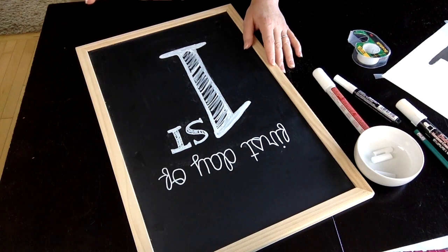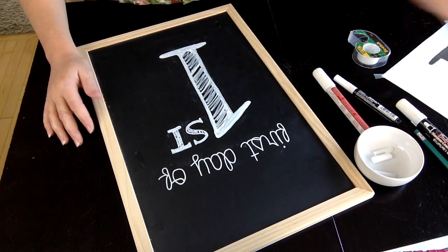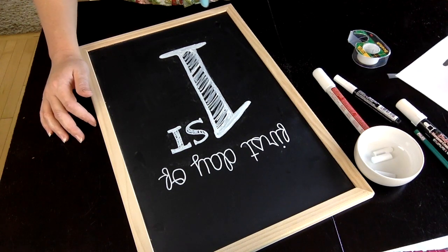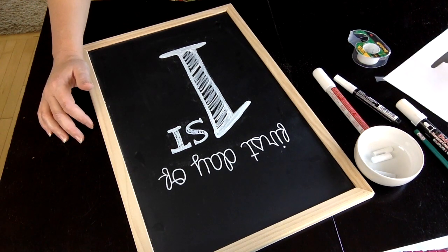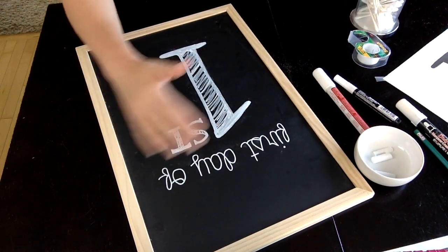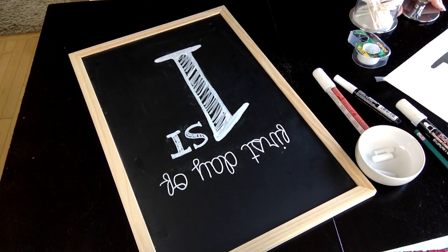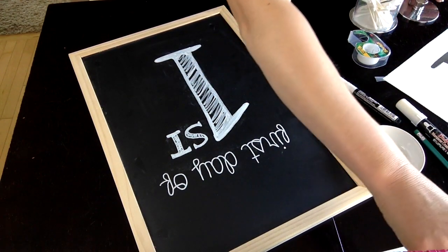Next, what I'm going to do is go back through. You can kind of see some of the dust around here, and you can easily just clean that up with a Q-tip. Or you can correct any errors that you might have.